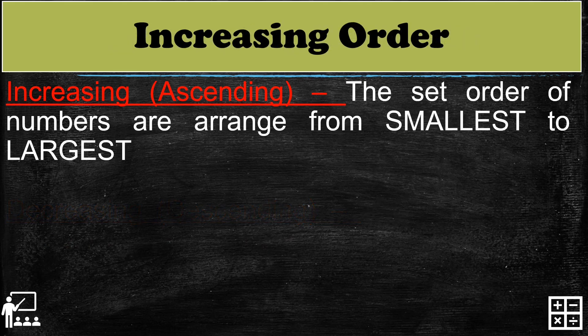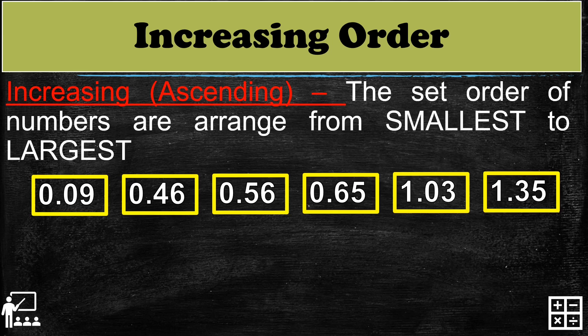Let's try increasing or ascending order, which goes from smallest to largest. We start on the smallest number up to the largest. So we have here a set: 9 hundredths is the smallest, next is 46 hundredths, then 56 hundredths, 65 hundredths, 1 and 3 hundredths, and 1 and 35 hundredths. As you can see, the numbers are arranged from smallest to largest — that is the increasing or ascending order.